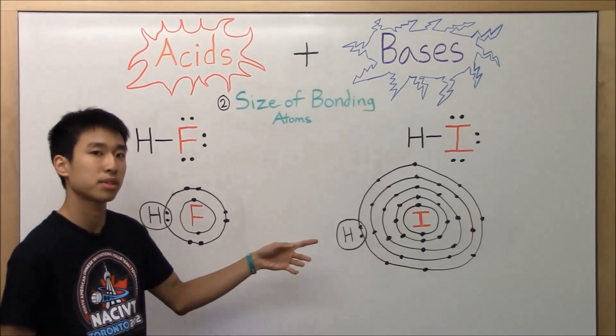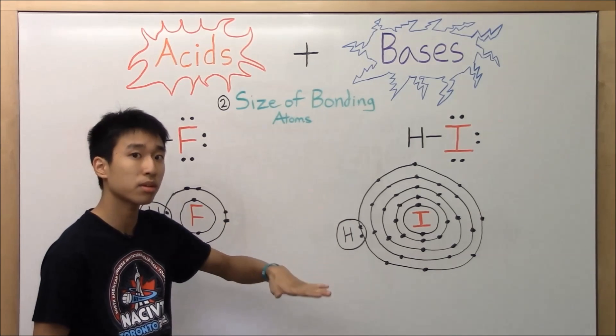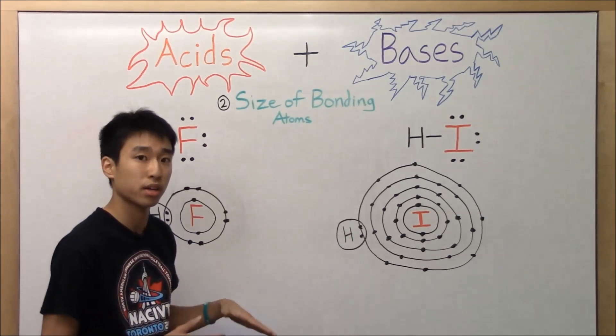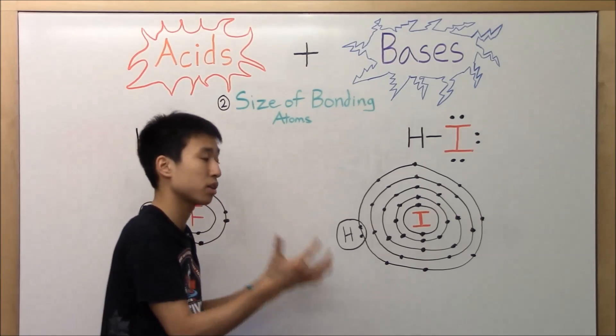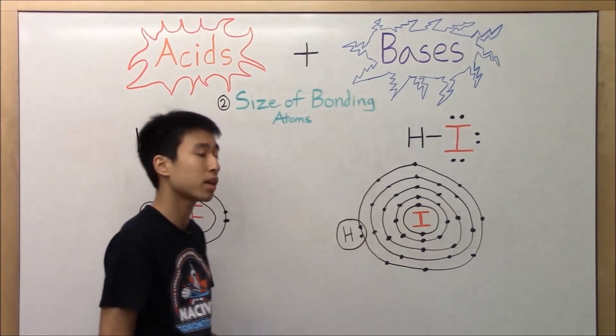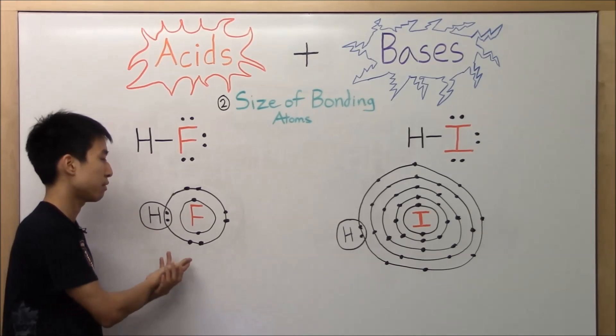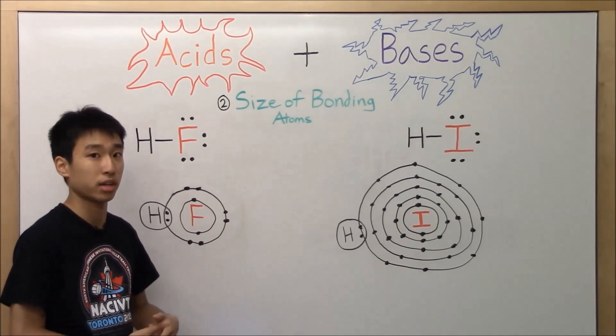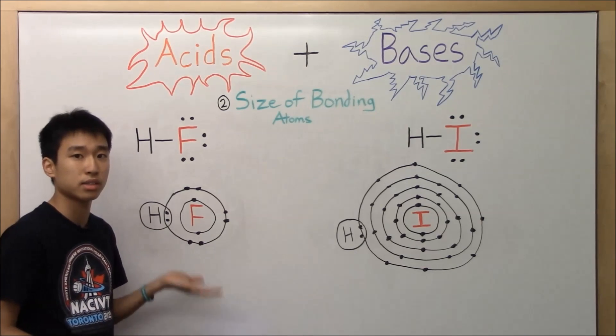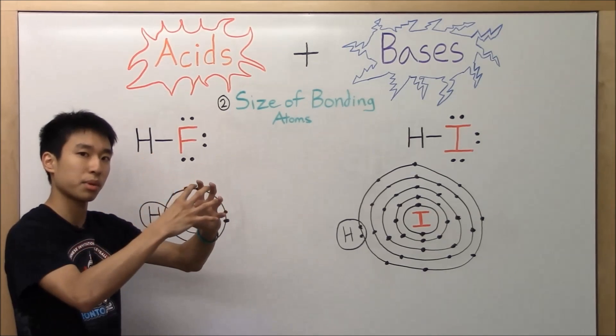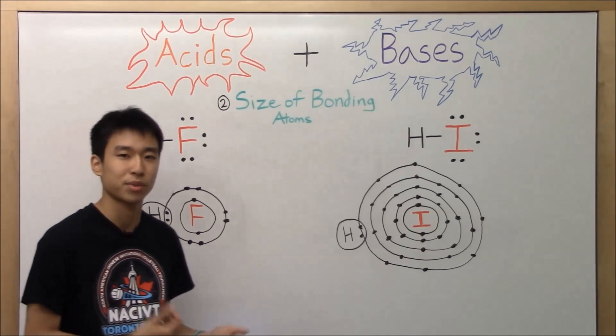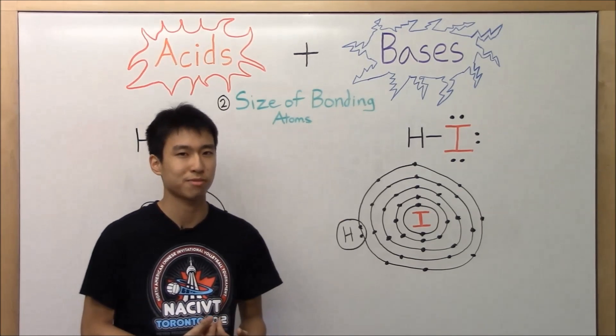And the reason why it's like this is basically iodine is lower on the periodic table. So as you go down the periodic table, you get more and more electron shells around your central nucleus. And as you go up, you have less electron shells. And fluorine is much higher than iodine on the periodic table. Hence, fluorine has less electron shells, smaller atomic radius, tighter bond versus iodine. Okay? And you can also look at it this way.